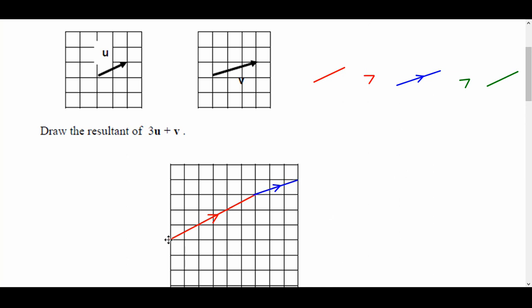Now the resultant vector is your very start point to your end point, so a direct line from the start to the end, so I'm going to do that. I'll take that here, and we'll join it right up to the end. And I'll put a little arrow on it. So there we have 3U plus V, and I'll just name it 3U plus V.